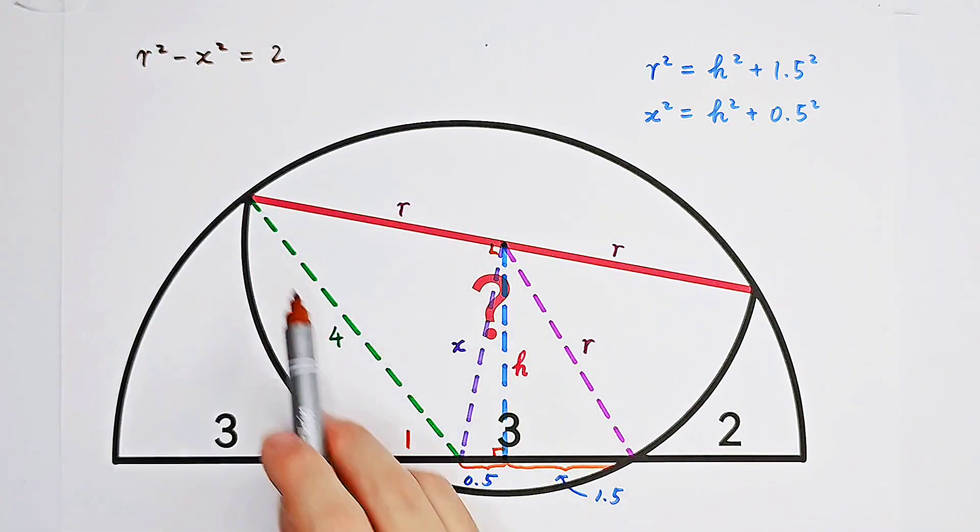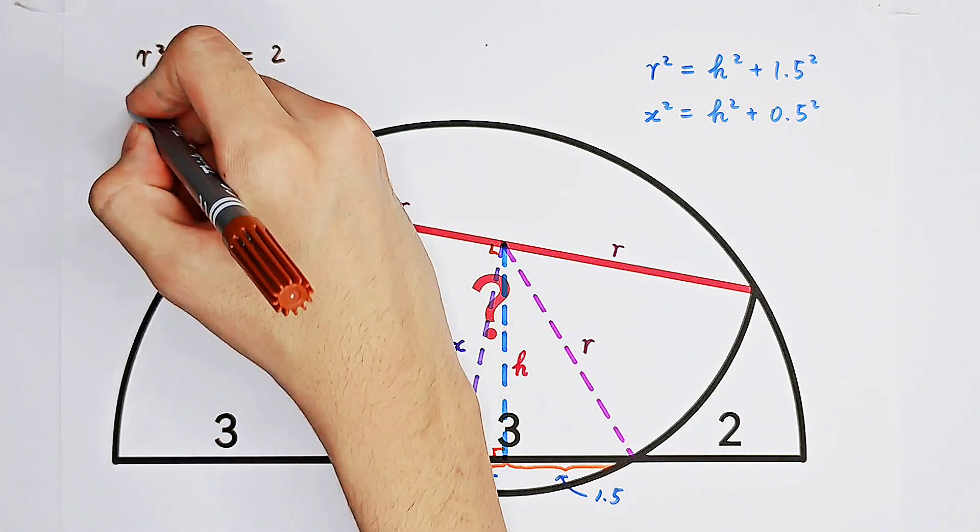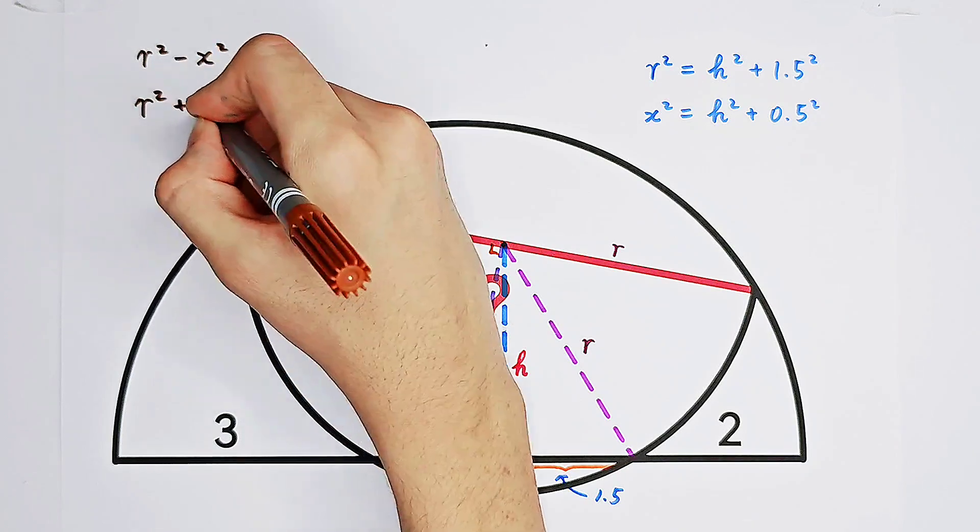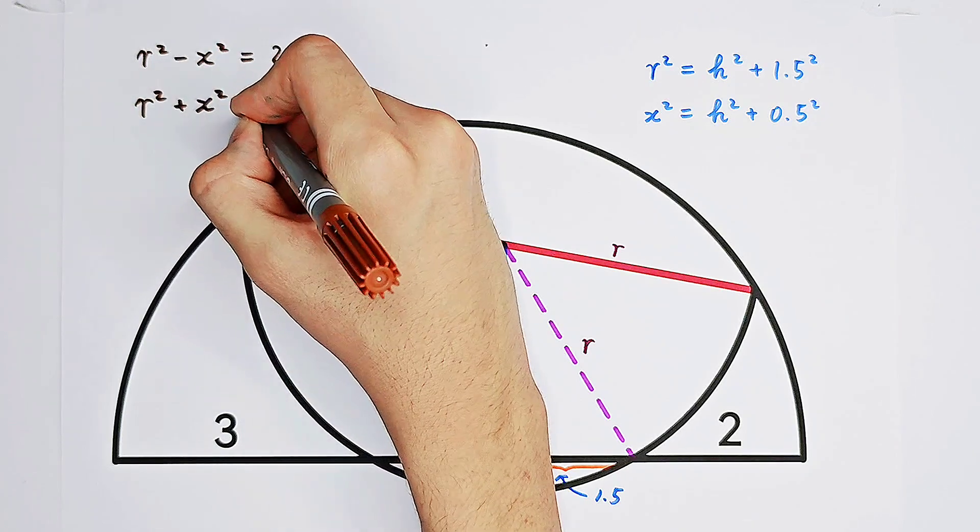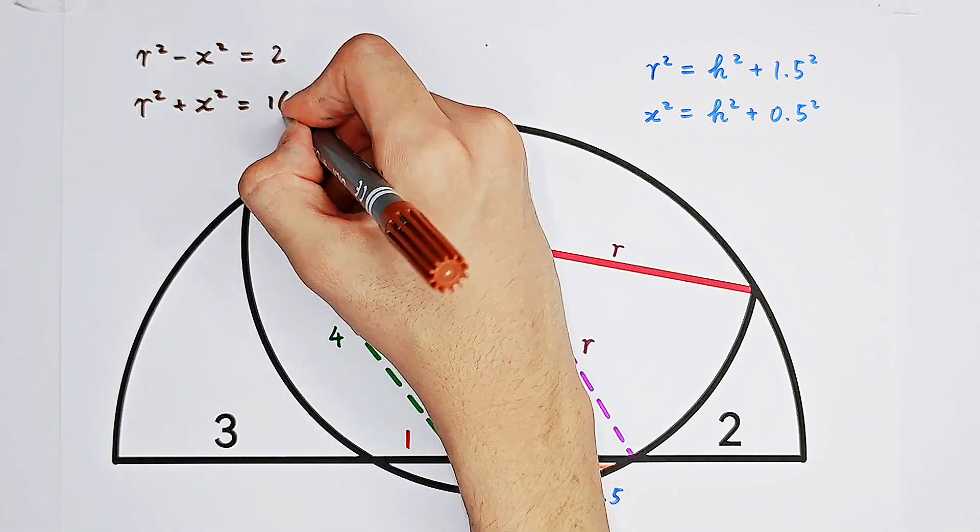And in this big right triangle, we have another clear relationship between R and X. That is, we get R squared plus X squared equals the hypotenuse squared, which is 4 squared equals 16.